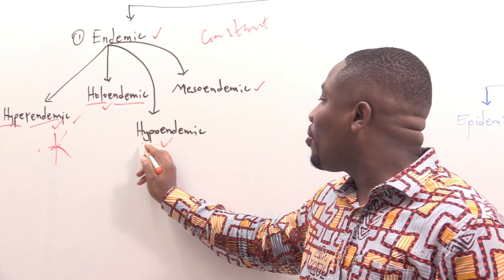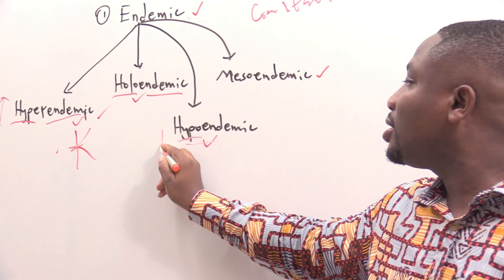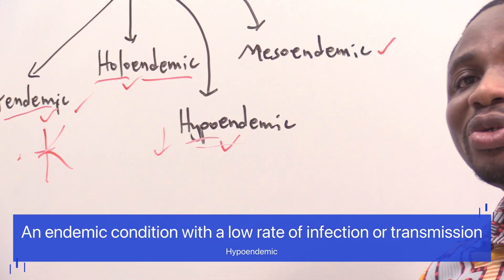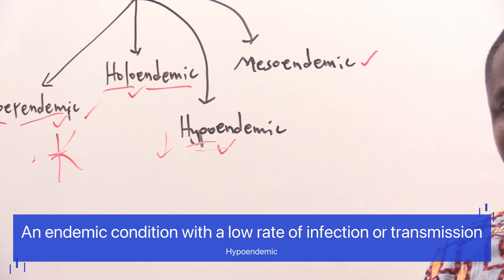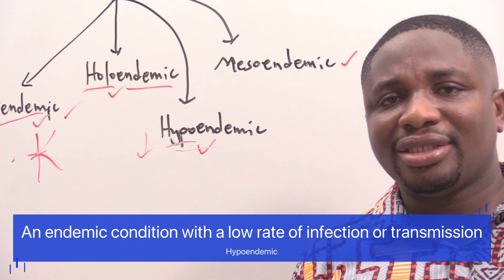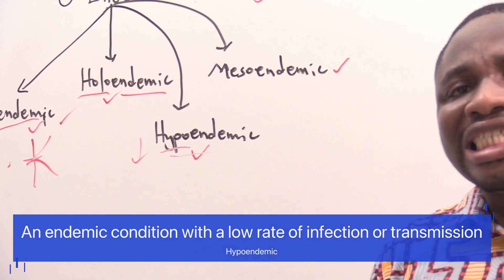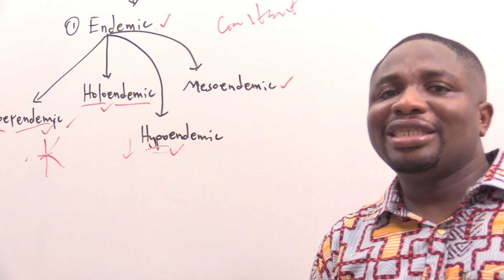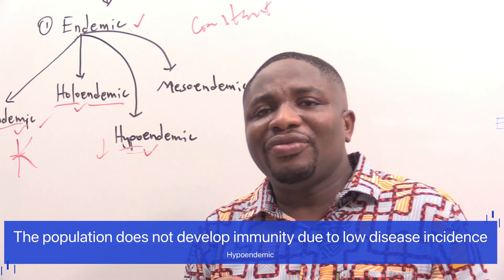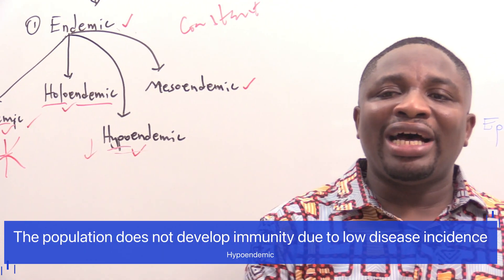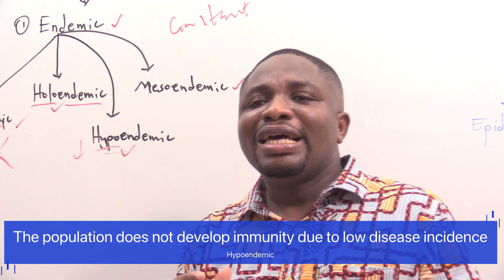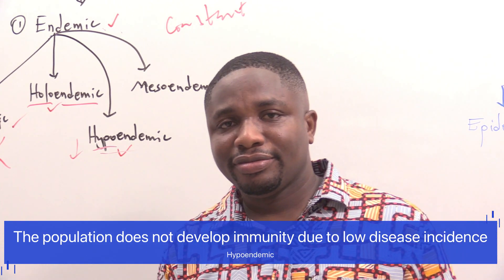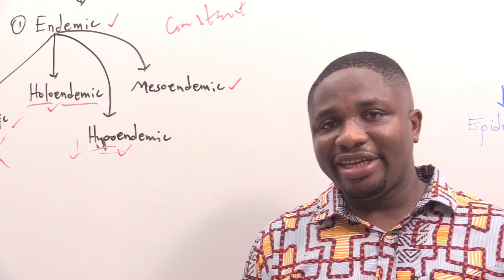The next one is hypoendemic. Hypo means low. It refers to an endemic condition or disease with a low rate of infection or transmissibility. The incidence of a disease is so low that the population does not even develop immunity.